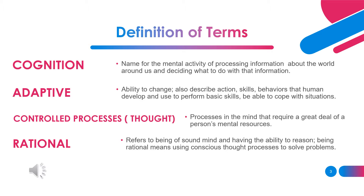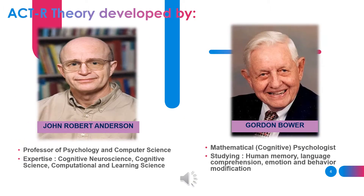Being rational means using conscious thought processes to solve problems. Adaptive Control of Thought, Rational, or ACT-R theory, was developed by John Robert Anderson, a professor of psychology and computer science with expertise in cognitive neuroscience, cognitive science, and computational and learning science. He is interested in understanding how children learn mathematics and building a computer simulation of child learning algebra that can reproduce learning achievement and reveal where difficulties in learning mathematics might be.